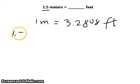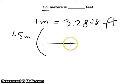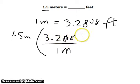1.5 meter. Let's multiply by the conversion factor. And meter would have to be in the denominator. 1 meter. 3.2808 feet.